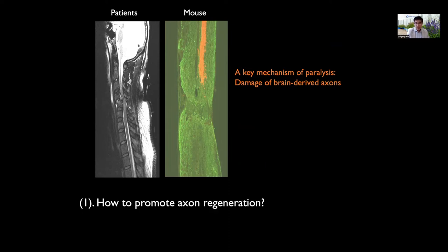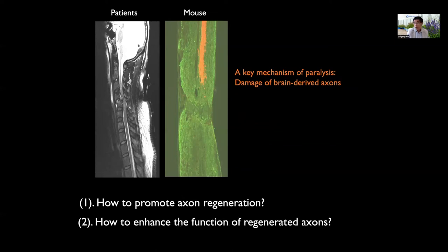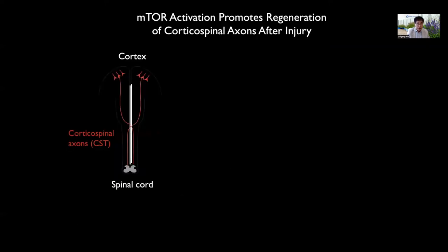With these models, we asked the question of how to promote axon regeneration and also how to further enhance the function of regenerated axons. In the past, we discovered a number of methods that can promote regeneration of corticospinal axons — the nerve fibers from the cortex projecting to the spinal cord.